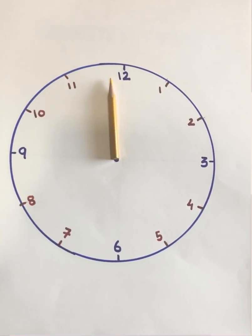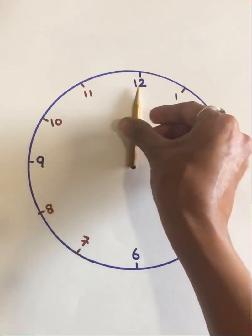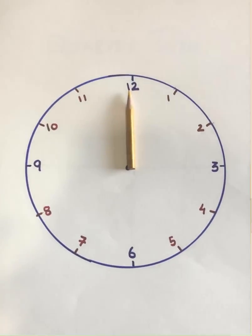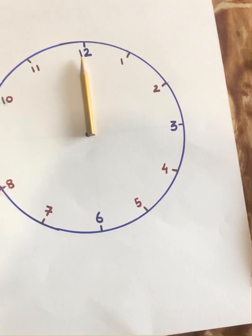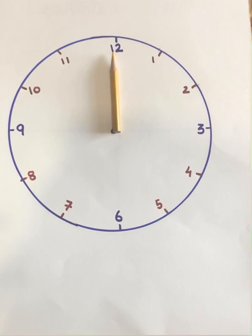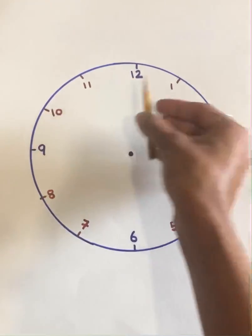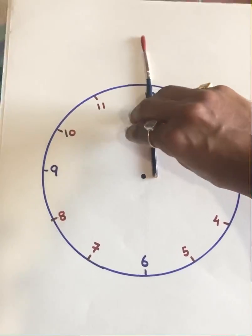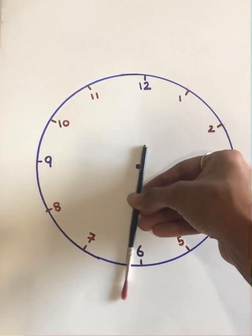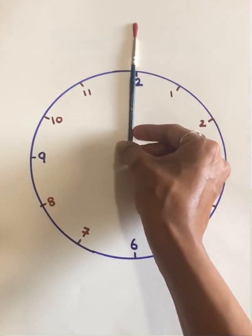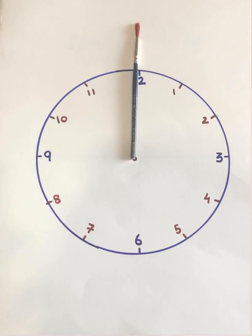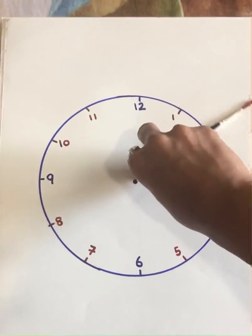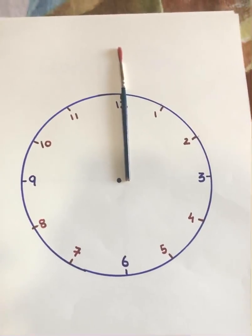Anticlockwise rotation is just the opposite. If this object rotates in this direction, it will be known as the object is rotating anticlockwise. Let's take a few other objects and see and try to rotate them clockwise and anticlockwise. Let me take this paintbrush. If I rotate it this way — this is clockwise rotation. And if I rotate this paintbrush in this direction, it will be anticlockwise rotation.